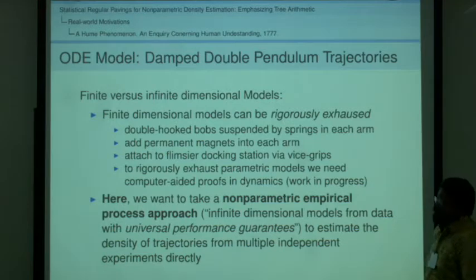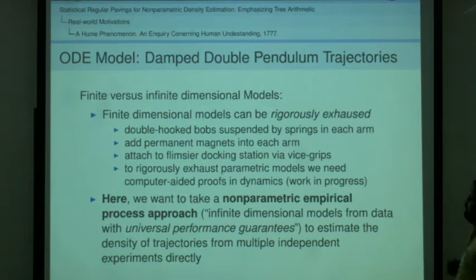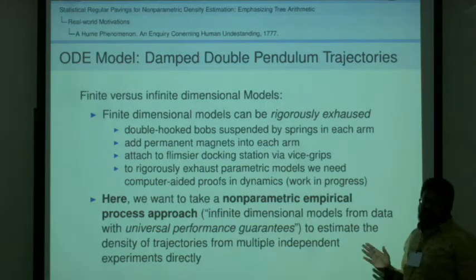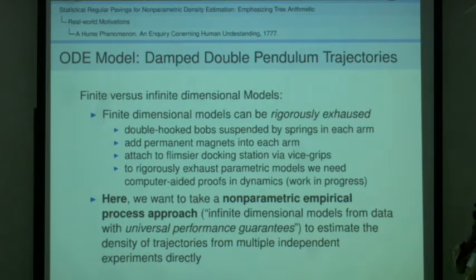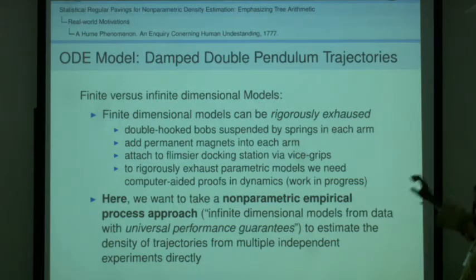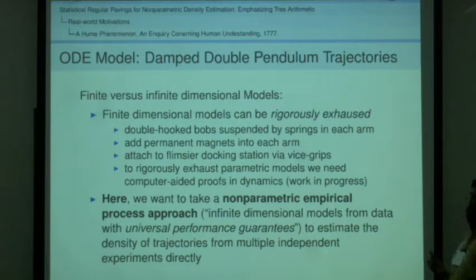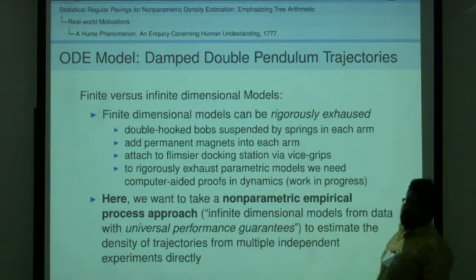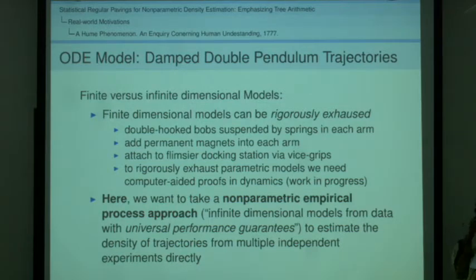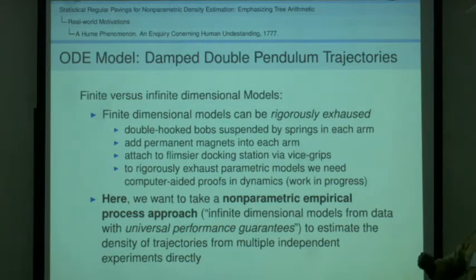We need to actually do computed proofs and dynamics. There's a Polish library, CAPD, we're using. We also use CXSC, so we use all the classical libraries. Today's talk or the planned talk, we're taking a nonparametric empirical process approach. Which means, essentially, we allow the models to be infinite dimensional. There's no finite parameter specification. But we want this inference to hold this property called universal performance guarantees. This is the property of the so-called L1 school.